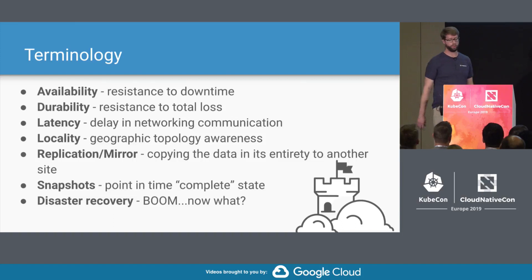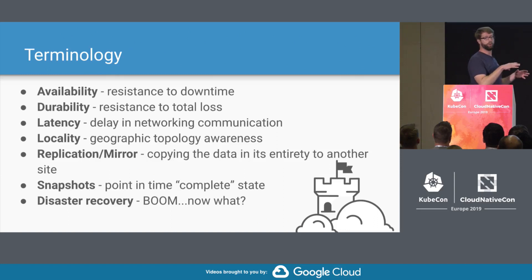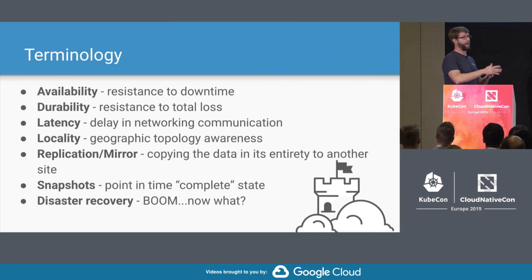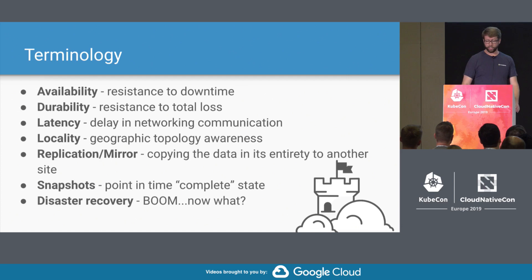A couple of important things to note here. The difference between availability and durability: availability is resistance to temporary downtime, like a data center going offline — if you are highly available, you've got that data available somewhere else and your clients' requests can be fulfilled from another data center. Durability is different — it means resistance to total, permanent loss. You've got enough copies of the data that if you lose one, a hard drive forever, you have another copy and the data still exists.